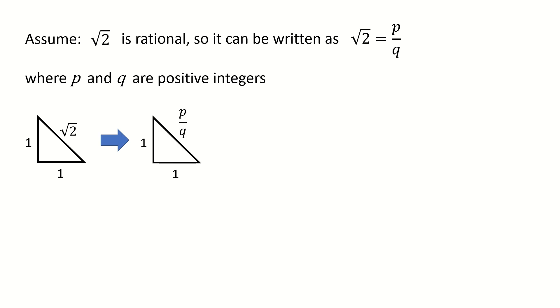To avoid confusion, we use p over q to replace √2 as the hypotenuse. Then we multiply q to all three sides, so we scale it into a bigger triangle with two sides equal to q and hypotenuse equal to p.